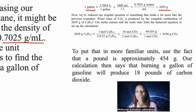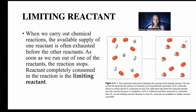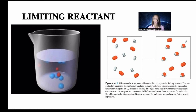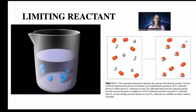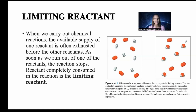When dealing with stoichiometric calculations, we also need to consider limiting reactants. When we carry out a chemical reaction, the available supply of one reactant is often exhausted before the other. The reactant completely consumed in the reaction is called the limiting reactant. If you run out of one reactant, the reaction stops because both reactants are needed to form the product.